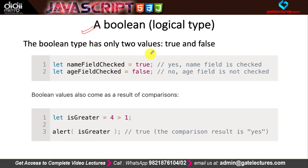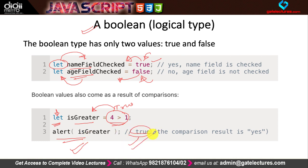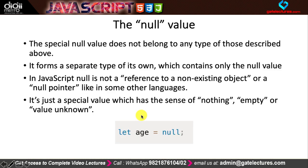The next data type is boolean. Boolean contains only two values: true or false. For example, variables nameFieldCheck and ageFieldCheck can store true and false respectively. You can also do: let isGreater = (4 > 1) — the result is true, so true is stored in that variable and the alert box will show true. It's a fairly basic logical data type.